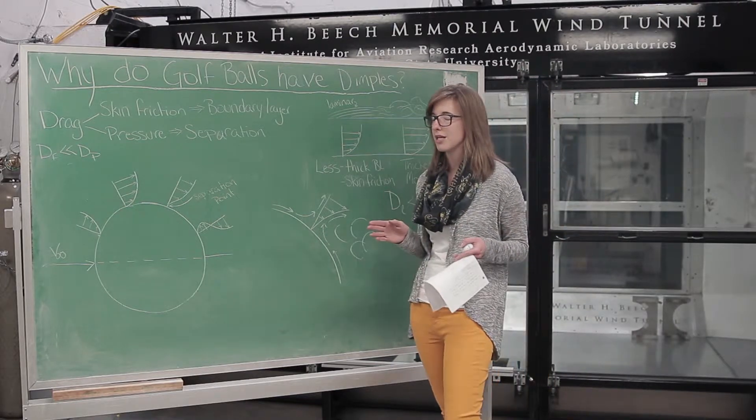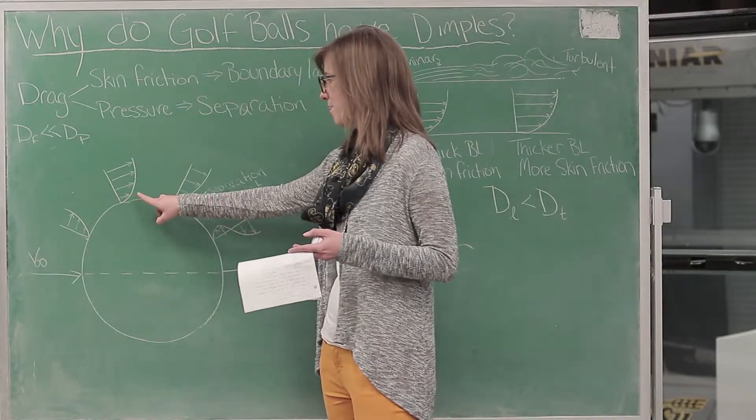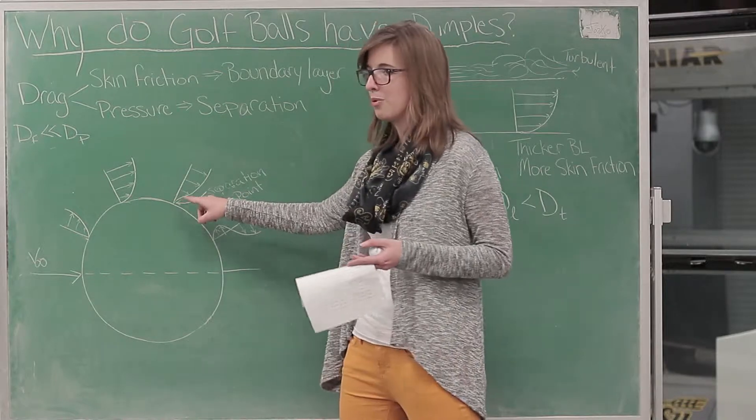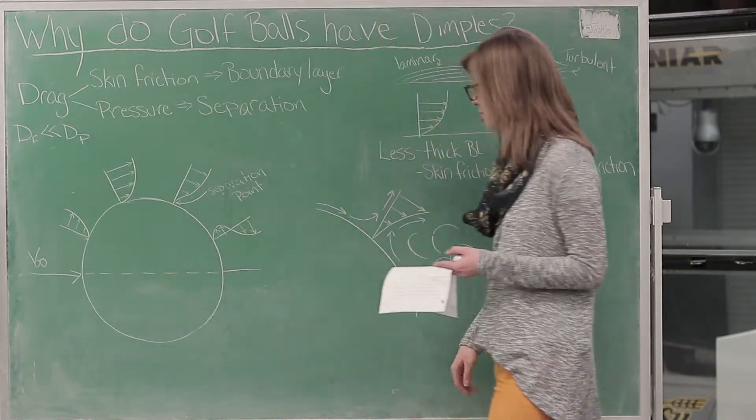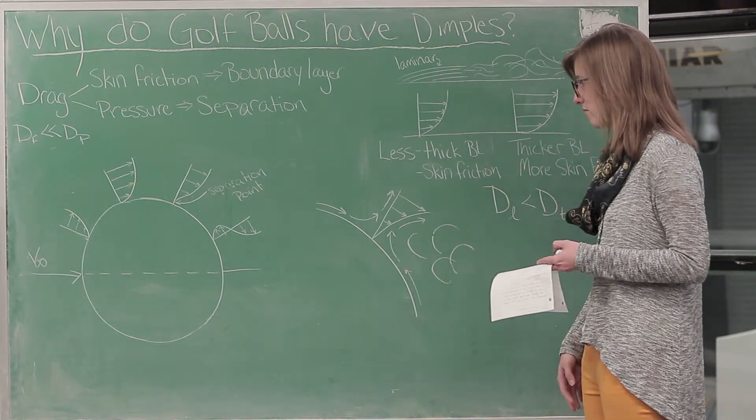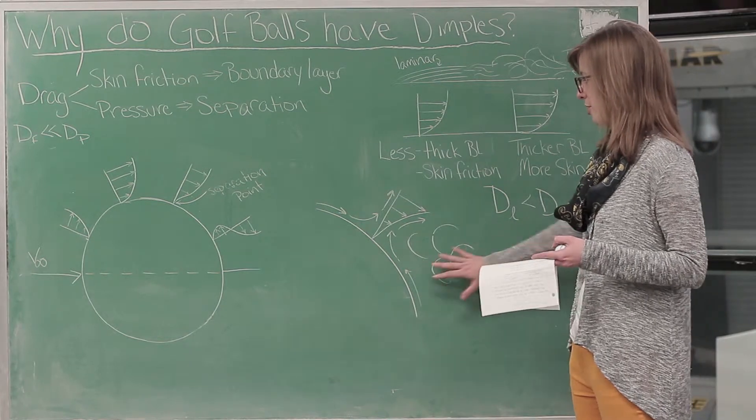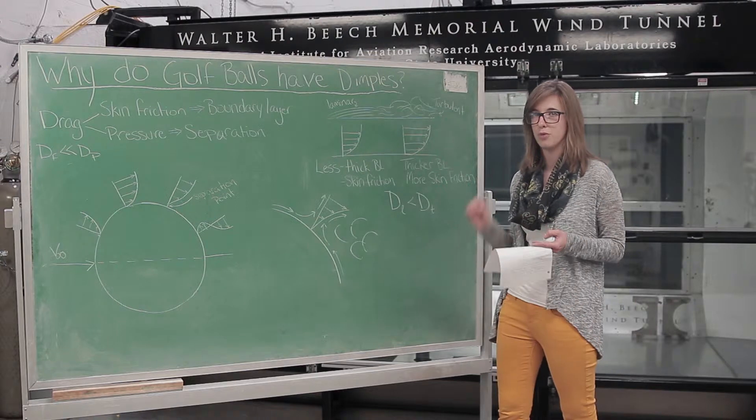Pressure drag is created by separation of flow from the ball. Flow will flow over your ball and hit some point where the pressure will start pushing your velocity backwards. When it pushes your velocity backwards, it creates a pressure wake drag in the back of your ball, which will pull your air backwards as opposed to pushing it forwards.